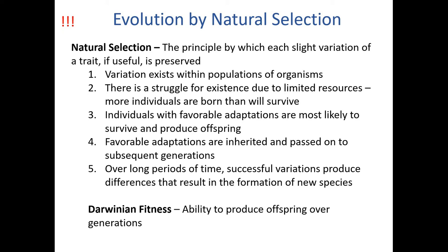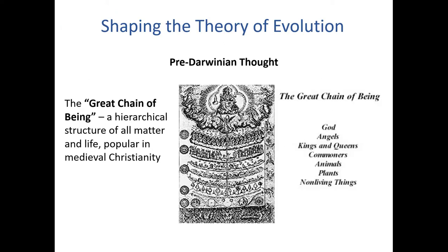So the question is what basically pre-existed this evolutionary thought and how did Darwin arrive at this line of thinking? Let's talk about the things that shaped the theory of evolution. In pre-Darwinian thought, there was this idea of a great chain of being, or a hierarchical structure of all matter in life. This idea was popular in medieval Christianity. This picture is a little hard to see, but basically what it depicts is this great chain of being idea.